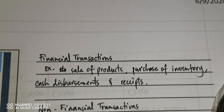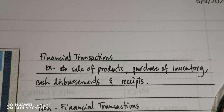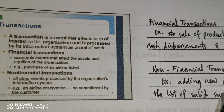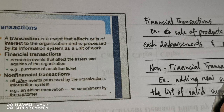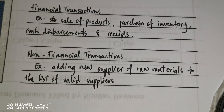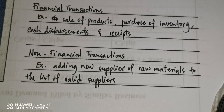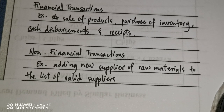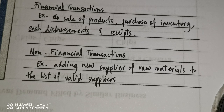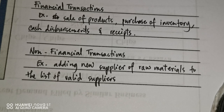When we say equity, there are two kinds: owner's equity, which is capital, and creditor's equity, which is liability. Non-financial transactions are all other events processed by the organization's information system — for example, adding a new supplier of raw materials to the list of valid suppliers. We do not record this as a journal entry because it has no effect on the assets and equity of the organization. However, it does have an impact on the accounting information system.